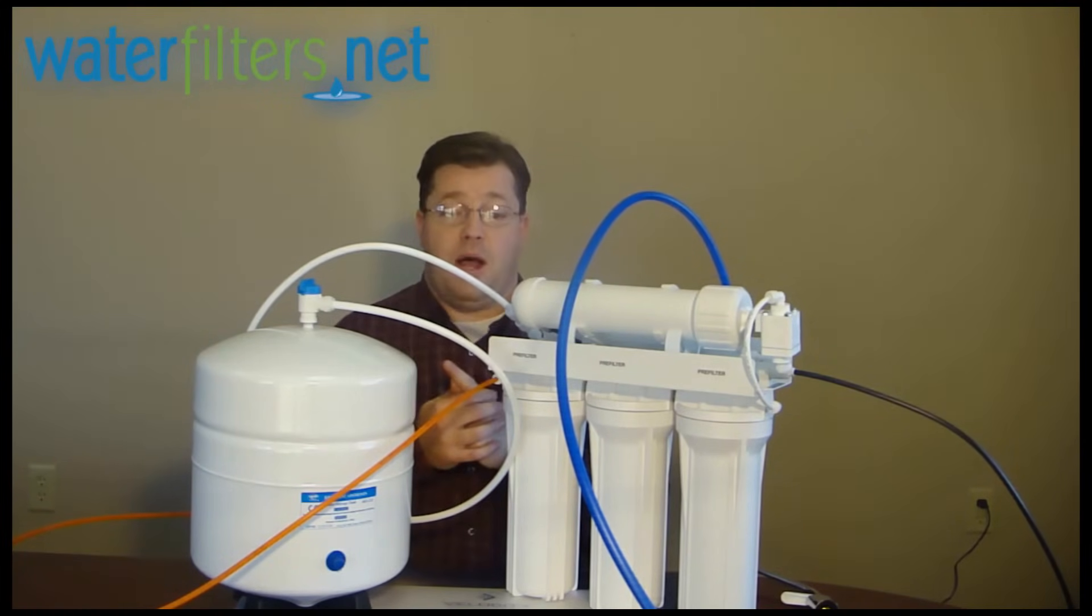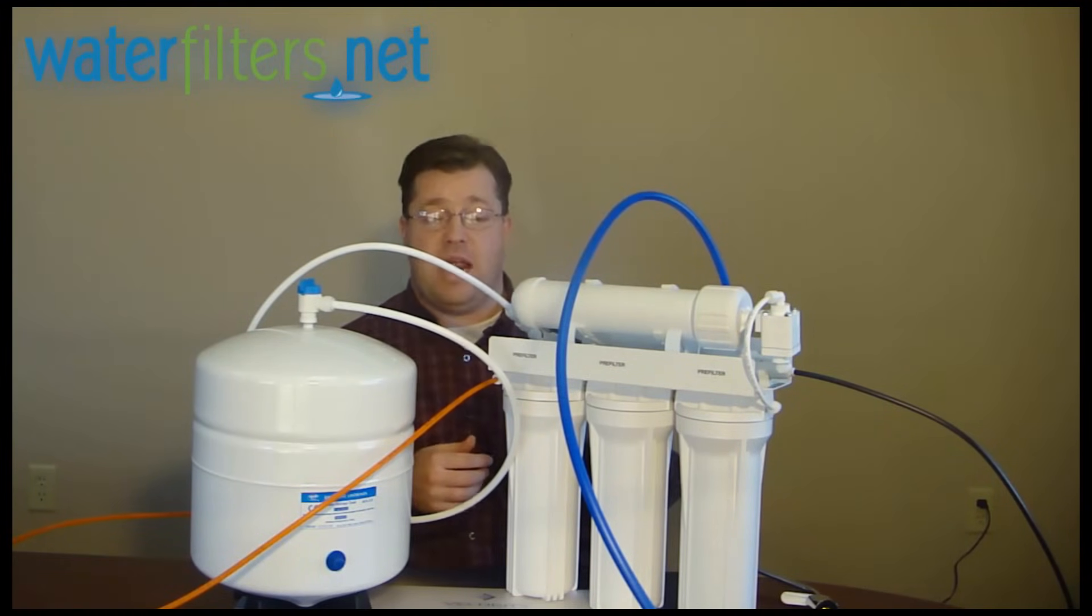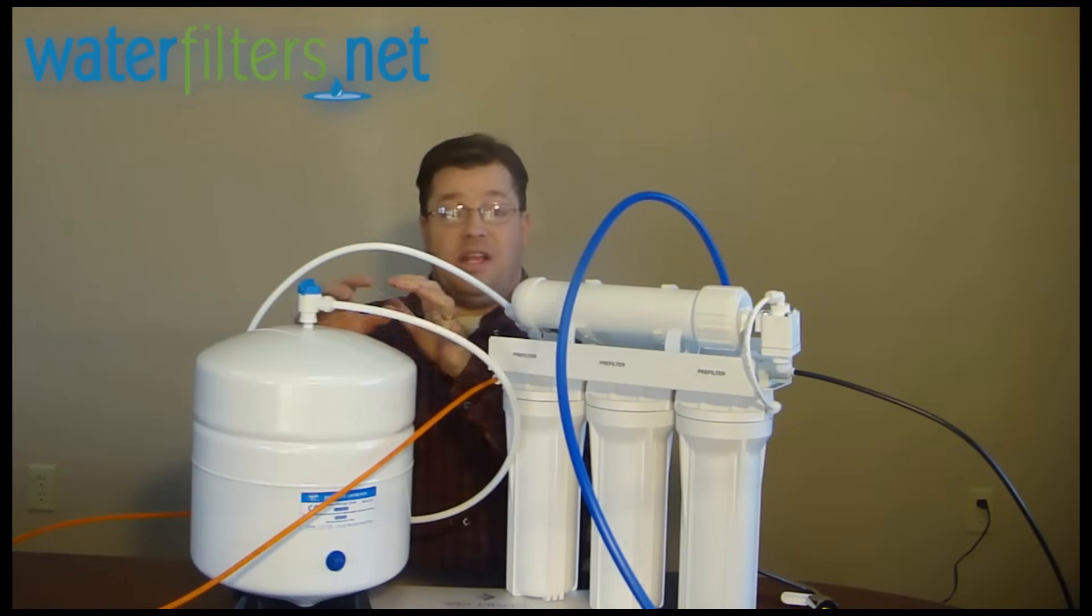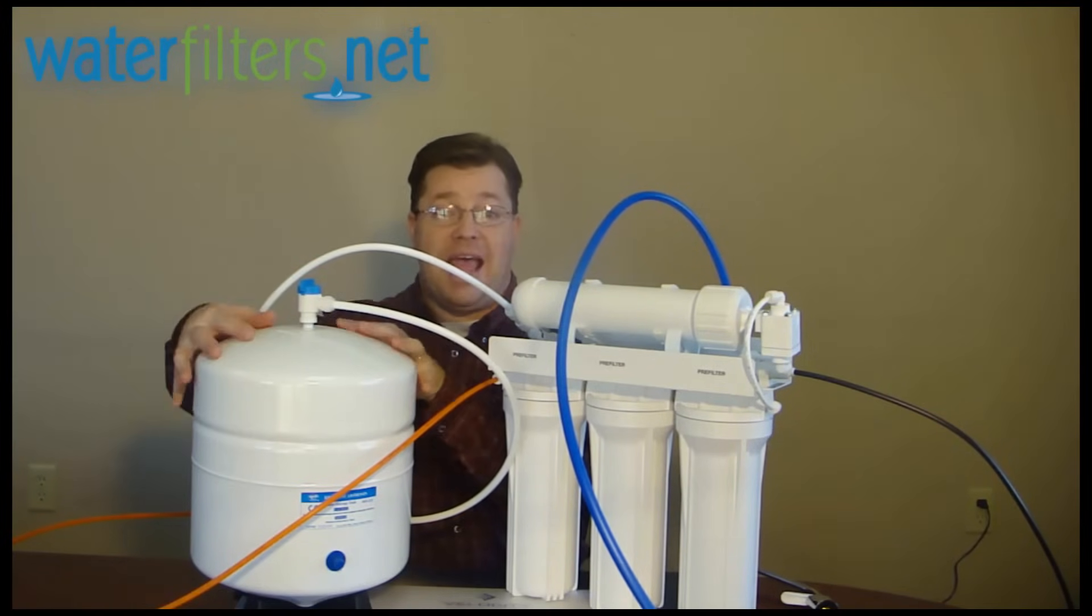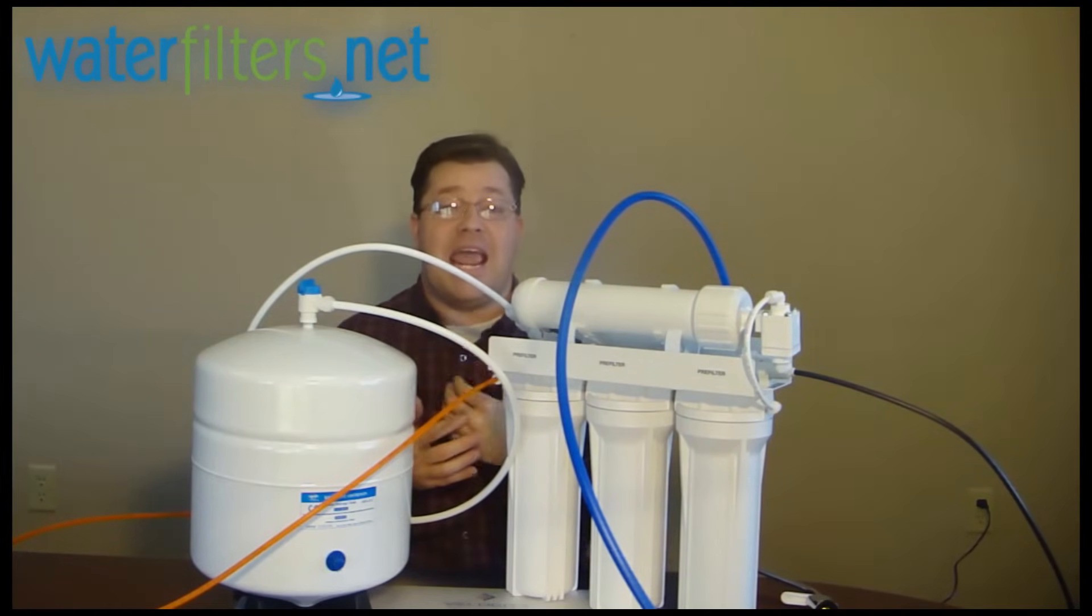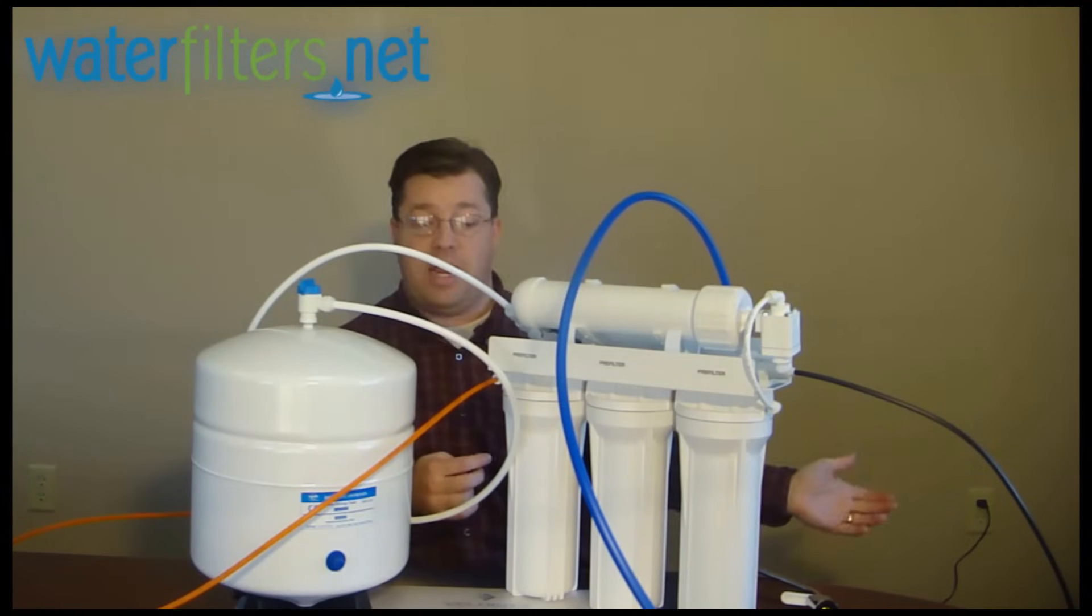The first most common problem is water that runs continuously down the drain. Now, a system like this, all RO systems, work on a system of pressure. So when the tank is full and has full pressure, that triggers a mechanism called an ASO valve, automatic shut-off valve. And it does just that. It automatically shuts off the flow of water so that the reject water doesn't continuously run down the drain.